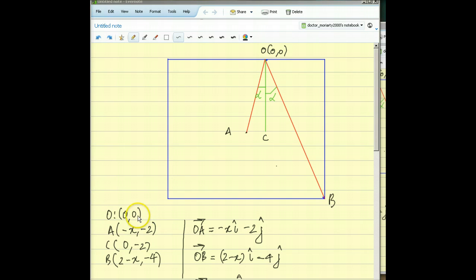If I write down the coordinates of the points, O is (0,0), A is minus X from C to A, so (-X, -2) because that's half the length of the board. Coordinates of C are going to be simply just going downwards by half the length of the board, so that's (0, -2).